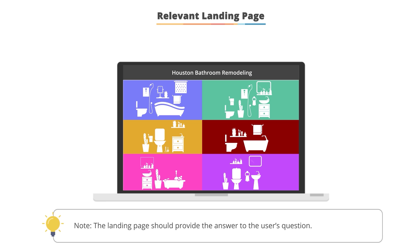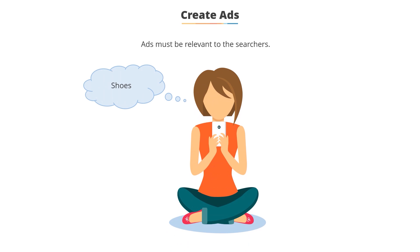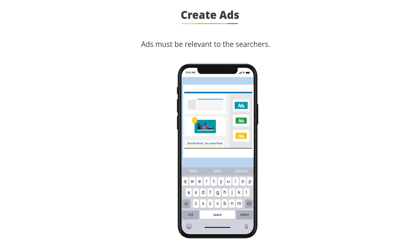When your landing page answers the user's question and has their information, it's easy for them to add a product to their cart, call the company, or fill out a form. You can have commercial results and still make money from helping a user find what they're looking for. An ad's purpose is to connect with a searcher, show them you can help them with the topic of their search, and persuade them to take action with your company.